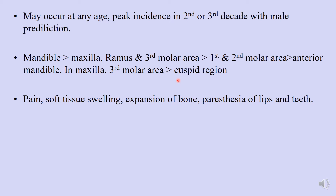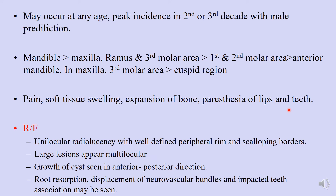This lesion may present with pain, soft tissue swelling, occasionally bone expansion, and paresthesia of the lip and teeth. Radiologically, it generally presents as a unilocular radiolucency with a well-defined peripheral rim and scalloping borders. As explained previously, a well-defined rim with scalloping borders indicates slow growth, giving surrounding bone time to produce peripheral bone to try to contain the lesion. Larger lesions are multilocular.